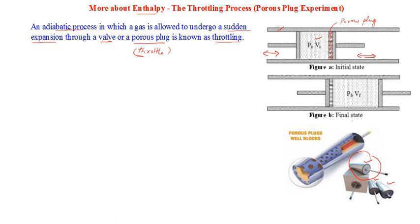We push the left piston towards the right. The gas in this chamber will be forced to pass through the pores to the other side. Due to gas moving to the right side, pressure builds up between the porous plug and the right piston, causing the right piston to move back as more and more gas goes to the other side.